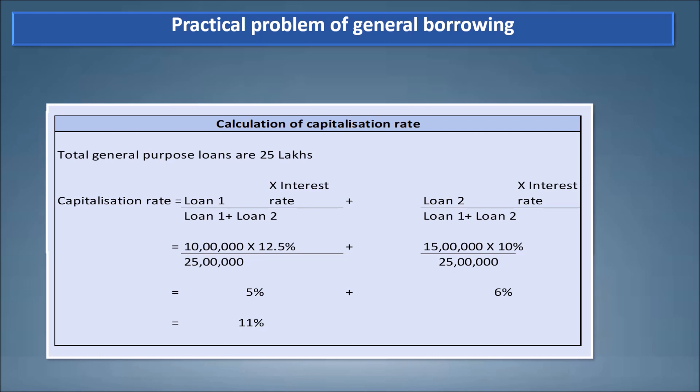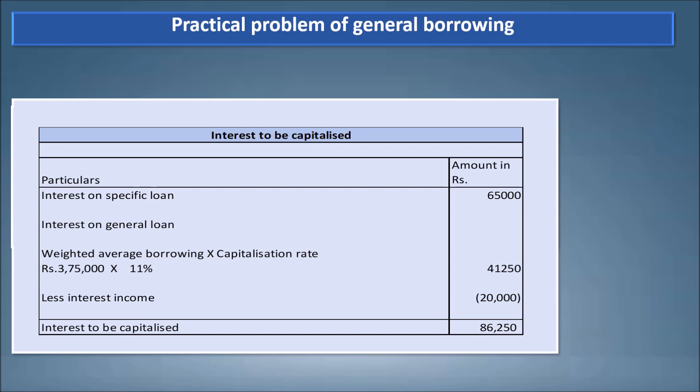The capitalization rate equals: (Loan 1 × interest rate of Loan 1 + Loan 2 × interest rate of Loan 2) divided by total loans — the expenditure amount is irrelevant here. The capitalization rate is 11%. Interest to be capitalized is the interest on the specific loan of 65,000 plus interest on the general loan, which is the weighted average borrowing of 3,75,000 multiplied by the capitalization rate of 11%, giving 41,250. We then deduct the interest income on investment of borrowings of 20,000, so the total borrowing cost to be capitalized is 86,250.